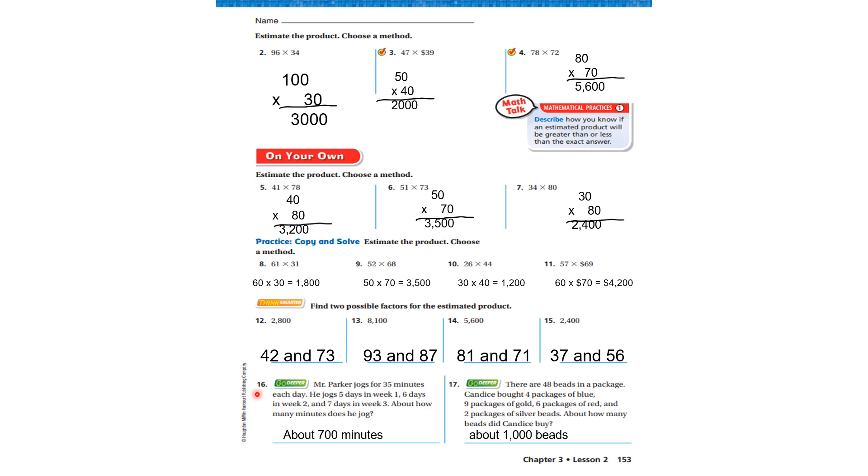Now let's look at number 17. It says there are 48 beads in a package. Candace bought four packages of blue, nine packages of gold, six packages of red, and two packages of silver. About how many beads did Candace buy? Well, I'm going to round 48 to 50. And I'm going to say 50 times four plus 50 times nine plus 50 times six plus 50 times two. And I'm going to come up with about a thousand beads.